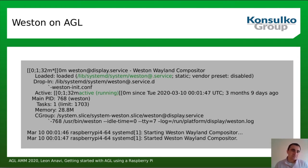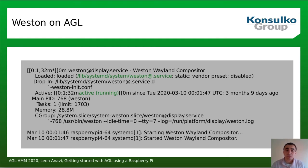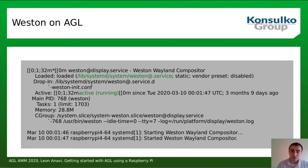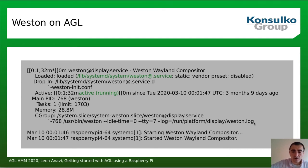Let's have a look at some troubleshooting hints. If for some reason you've changed something and nothing appears on screen, the first thing to check is whether Weston is running. Since AGL uses systemd, you can type 'systemctl status weston' to check the status of the Weston display service. In this particular case Weston is active and running, so everything is fine. You can also look at the logs generated by Weston to debug any issues.